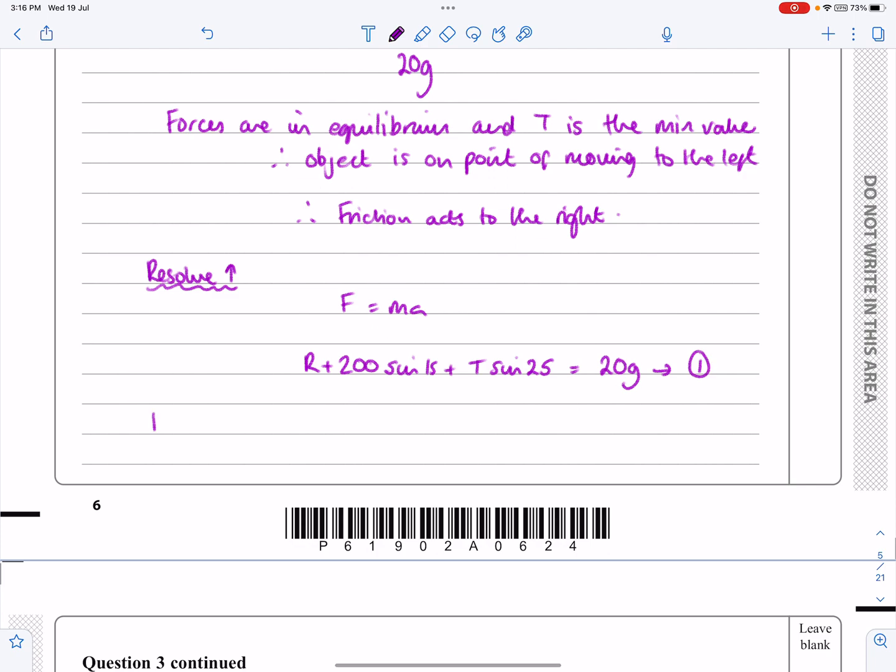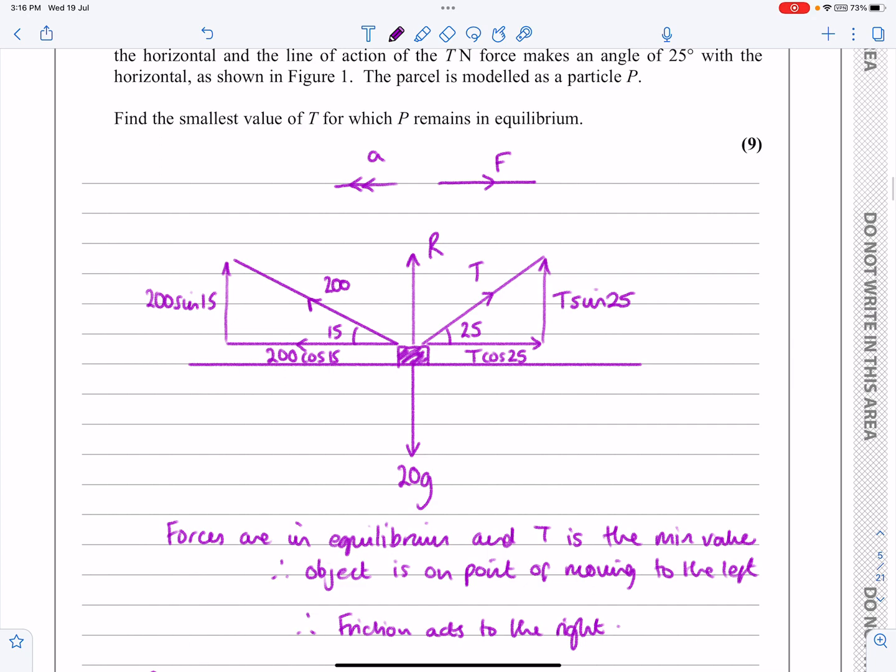Then if I resolve horizontally, what have we got going on horizontally here? So like we've just said now, in this case, I'm going to get this one minus this one minus this one is equal to null or forces to the left are equal to forces to the right. Doesn't matter how you write it down. As long as we understand what you're doing here.